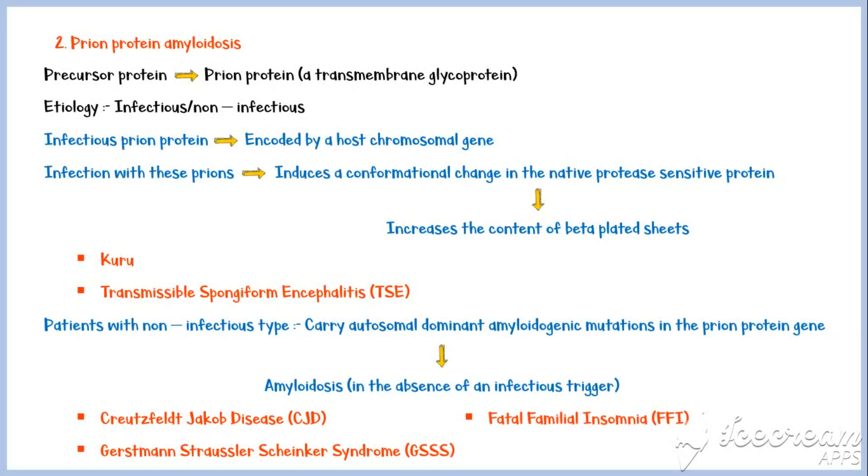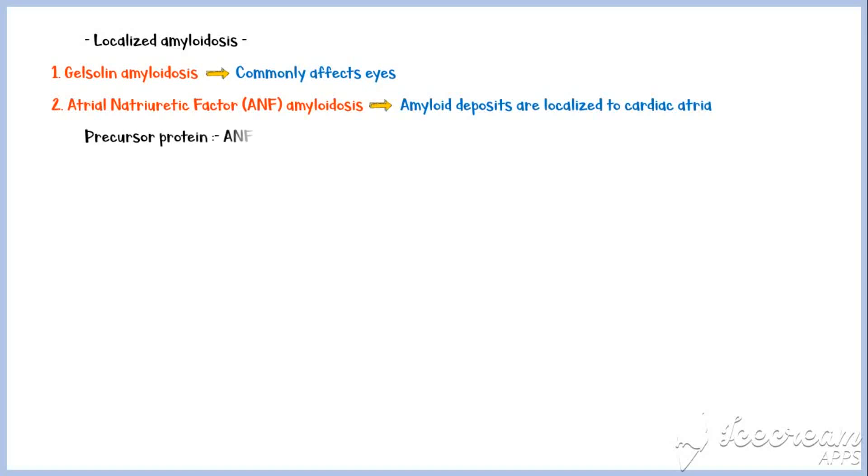Examples for localized amyloidosis include Gelsolin amyloidosis, which commonly affects the eyes. Atrial natriuretic factor amyloidosis, where the amyloid deposits are localized to cardiac atria. Here, the precursor protein is the atrial natriuretic factor. Lactoferrin amyloidosis, which commonly affects the cornea. Calcitonin amyloidosis. And prolactin amyloidosis.